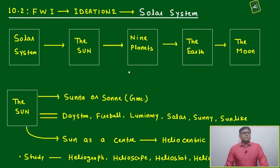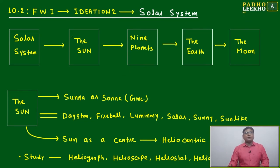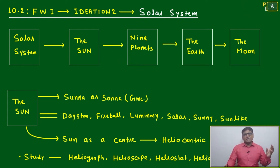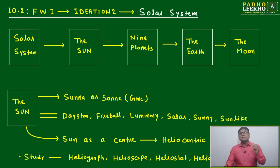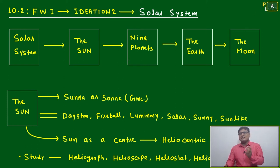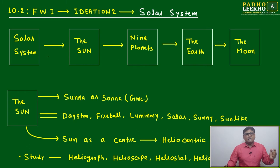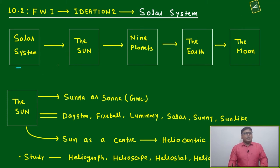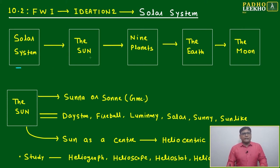We are coming to our second edition of Framework One, related to the solar system. We have discussed nothing, god, universe — from the universe we came down to galaxy, stars, and now we are coming to the solar system in a logical sequence. The next idea unit is the sun.